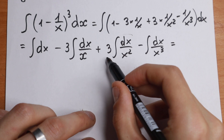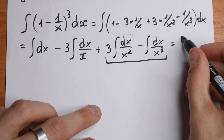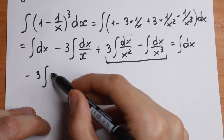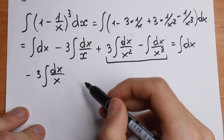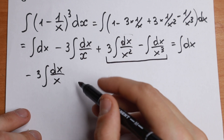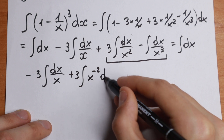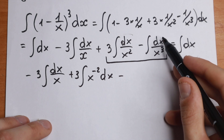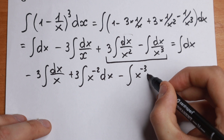Let's rewrite these last integrals in another way, since not all of them are direct table cases. We will have: integral of dx, minus 3·∫(1/x)dx — which is a table case — plus 3·∫x⁻² dx, and minus ∫x⁻³ dx.